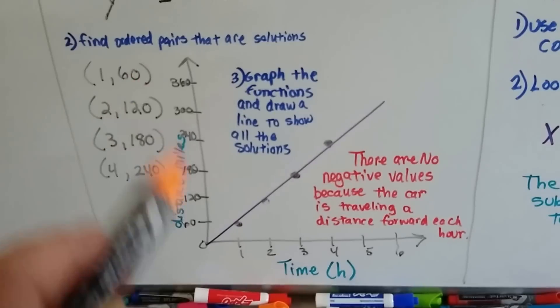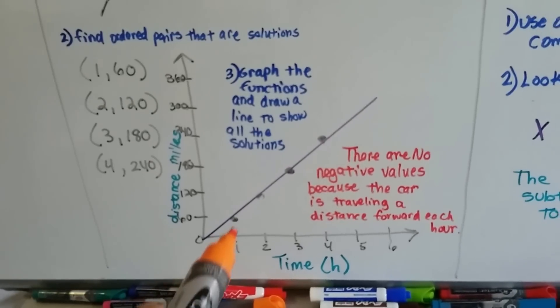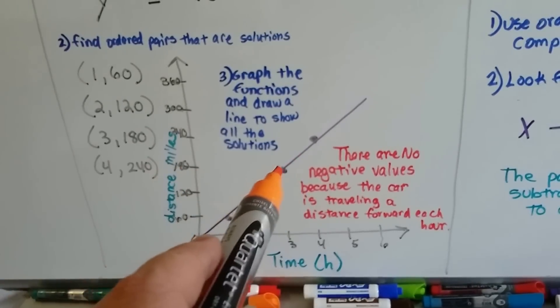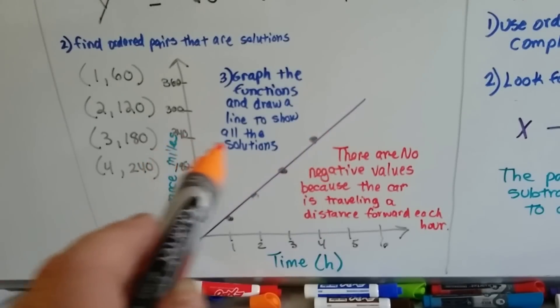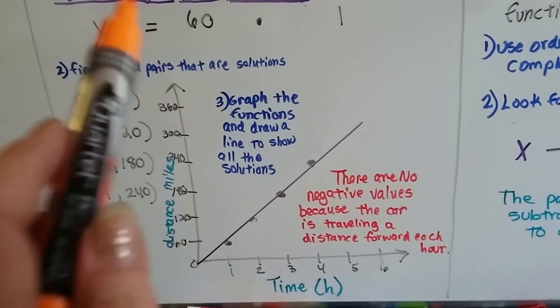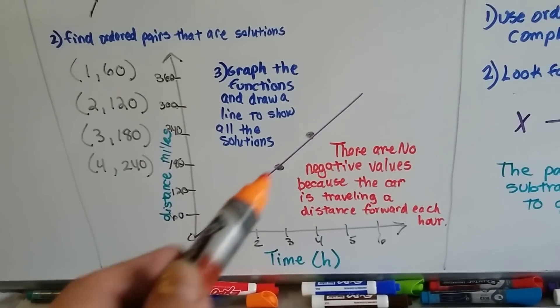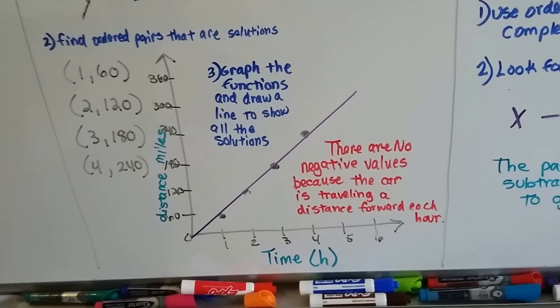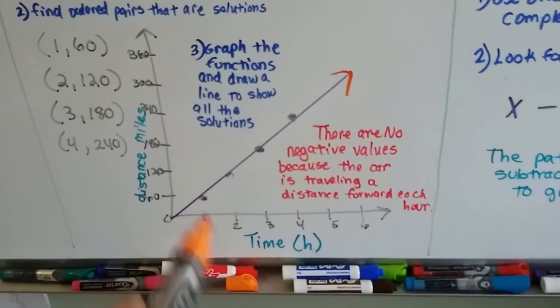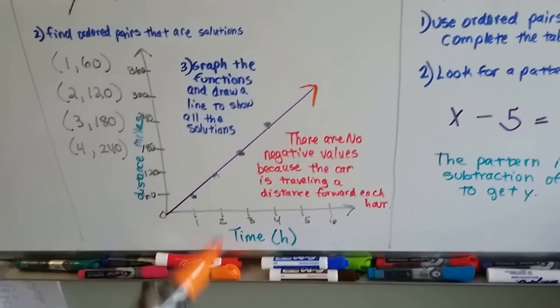So here's the distance in miles. Zero to 360, I went. And here's the time in hours. So in one hour, it goes 60. In two hours, it goes 120. In three hours, it goes 180. In four hours, it goes 240 miles. And then you draw a line, and then everything on this line would be considered a solution for that equation. And there's no negative values because the car is traveling a distance forward each hour. So we're going this way. And the time doesn't go backwards. Time can't go backwards.